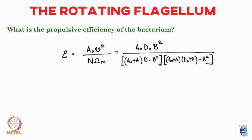The propulsive efficiency is defined as the ratio: numerator is the useful power — the work done to drag the whole body along at velocity v, which is A_naught × v², using the fact that drag force = A_naught × v. The denominator is the input power N × ω_m — torque times angular velocity of the motor.